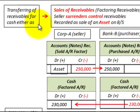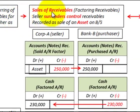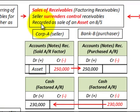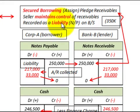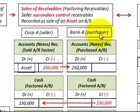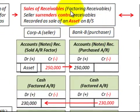There are two basic ways for transferring receivables for cash. The first is a sale of receivables, also called factoring, where the seller surrenders control of the receivables and it's recorded as a sale of an asset on the balance sheet. The second is secured borrowing, where you assign or pledge receivables, the seller maintains control, and it's recorded as a liability — a notes payable — on the balance sheet.